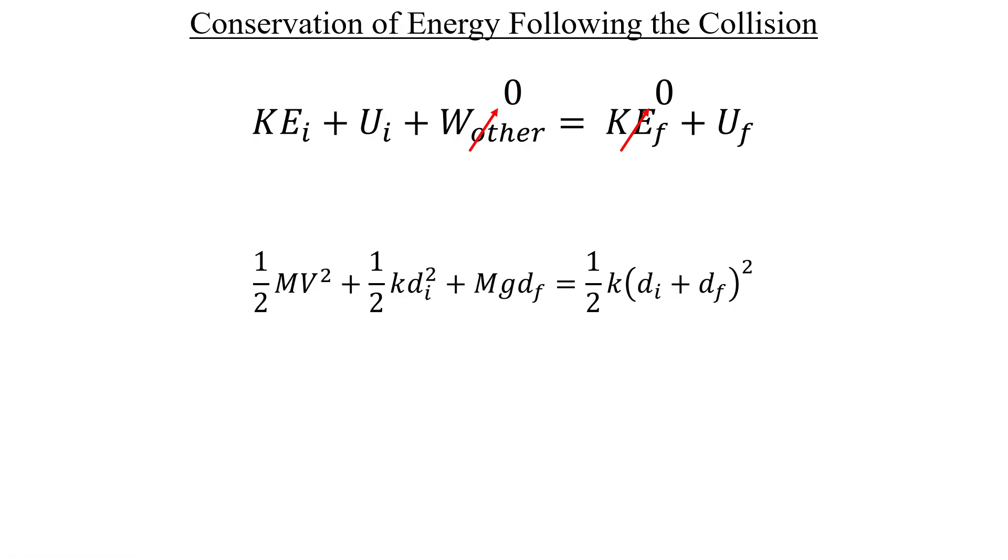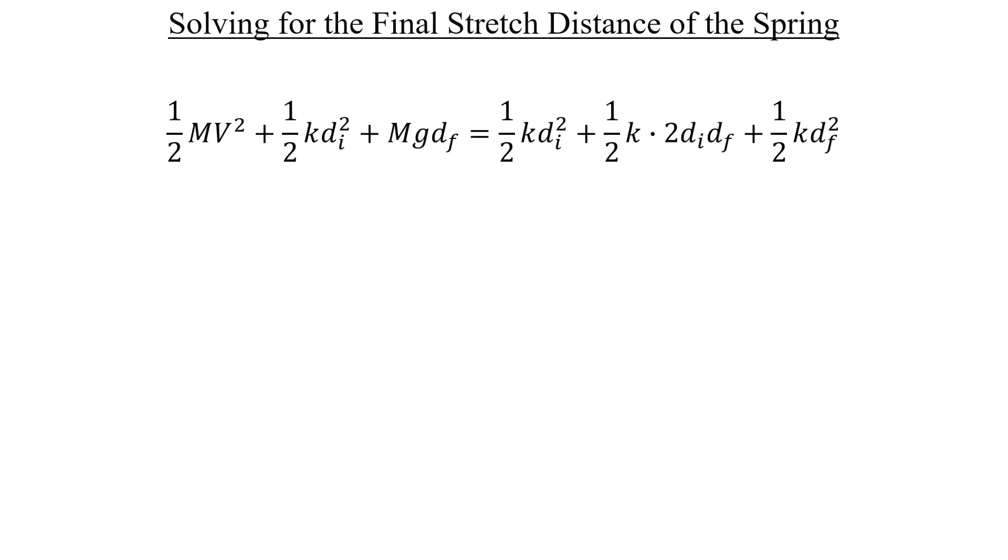On the right, our displacement variable in the spring potential energy now accounts for the total stretch distance, which is the sum of the individual stretch distances of d sub i and d sub f. Let's start here by foiling this squared piece on the right, and I'll distribute the one half k coefficient to everything inside the parentheses. Here's what we get. Notice that we have the same term on both sides, this one, and this one here.